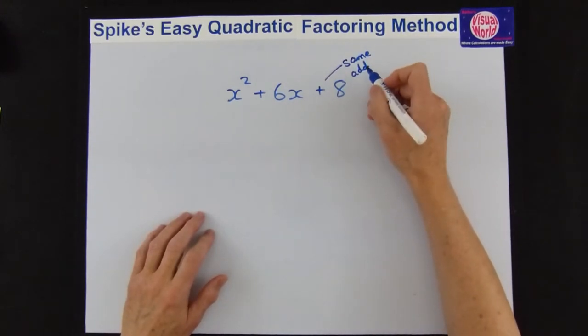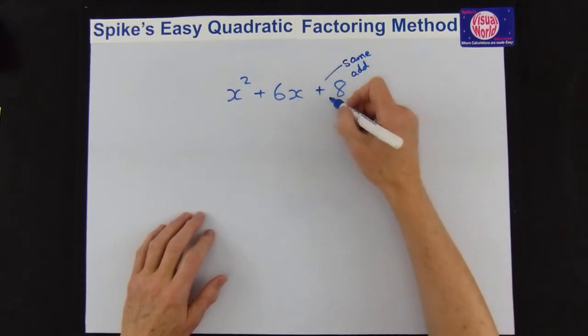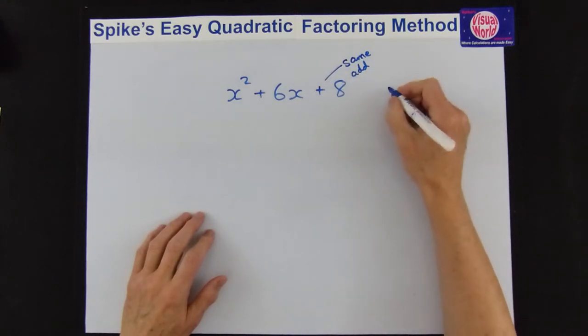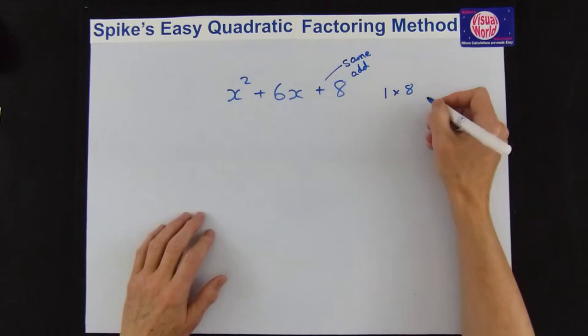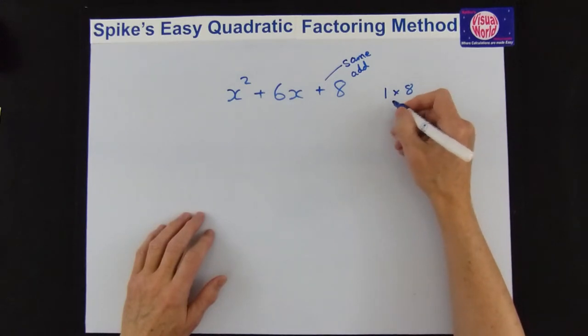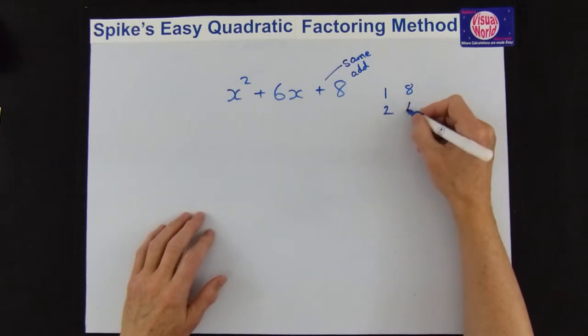So what we do now is we just get started on that 8. We need the factors that give you 8. So we've got 1 times 8 will give you 8, and in fact we don't bother putting the times in the middle, we've got 2 and 4. 2 times 4 gives you 8.